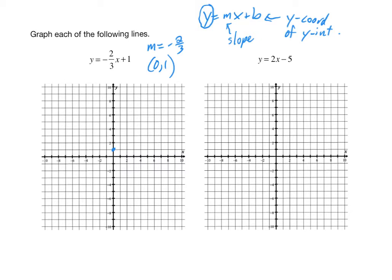Then from there, we can get other points by using the slope. The slope, again, is negative two-thirds. We can think about that as rise over run. So if we were to go up 2 from our point, would we want to go right 3 or left 3 to have a negative slope? Remember, negative slope means the line is decreasing from left to right. So if we go up 2, we need to go left 3 to have a negative slope. We can continue this pattern: up 2, left 3; up 2, left 3.